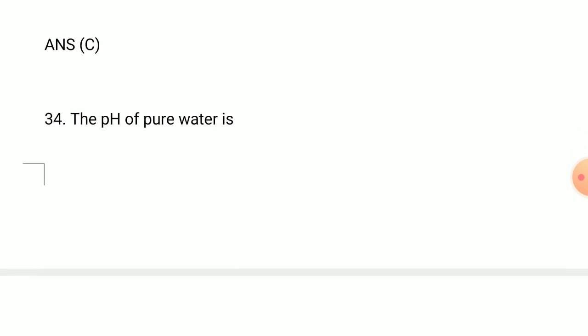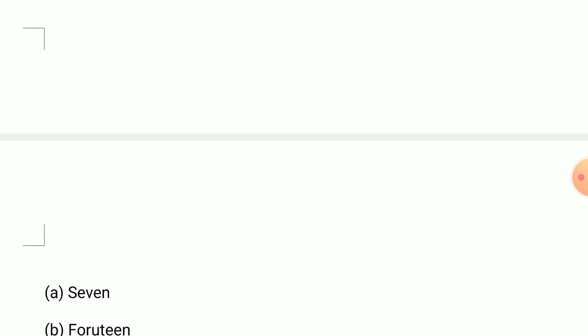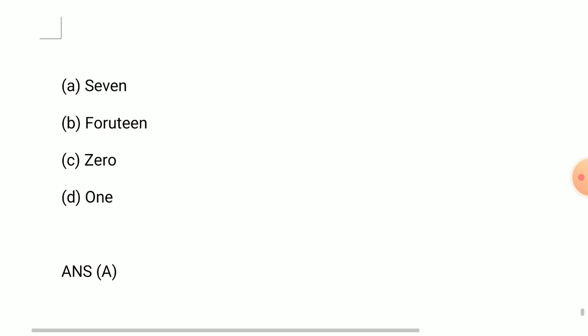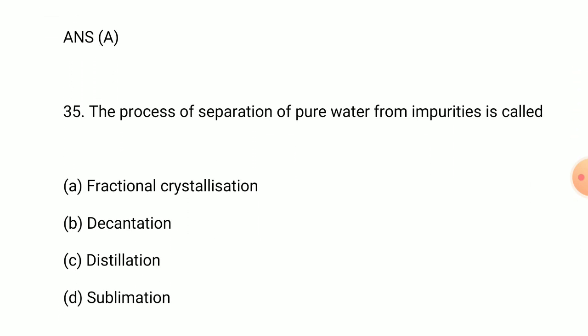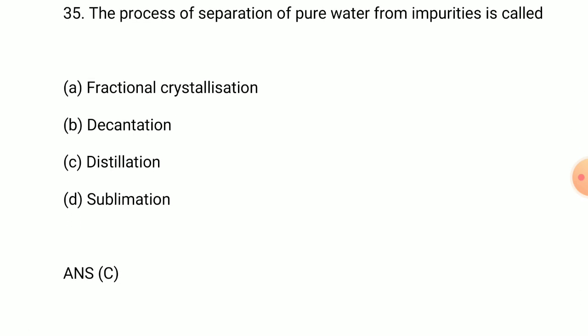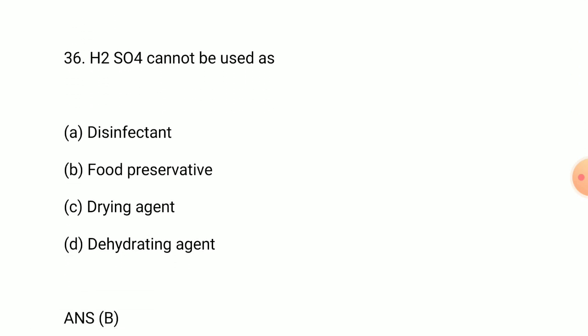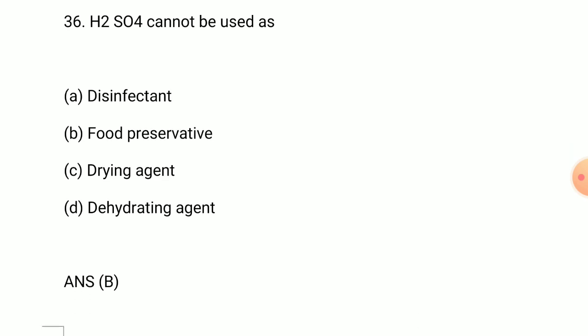Question number 34: the pH of pure water is answer is 7. Question number 35: the process of separation of pure water from impurities is called answer is distillation. Question number 36: H2SO4 sulfuric acid cannot be used as answer is food preservative.